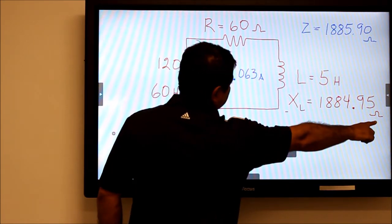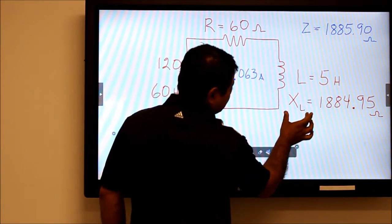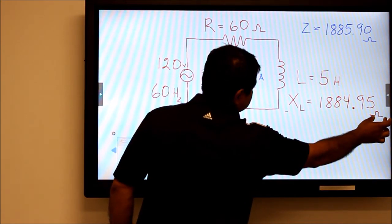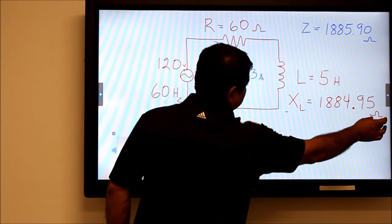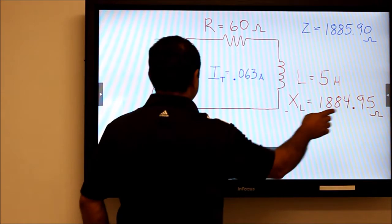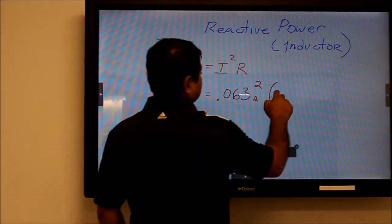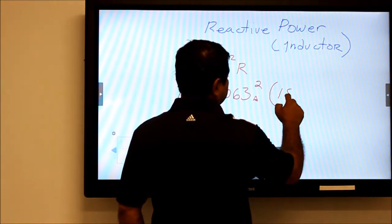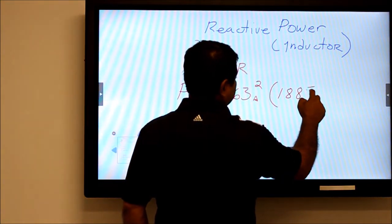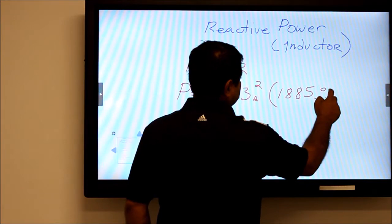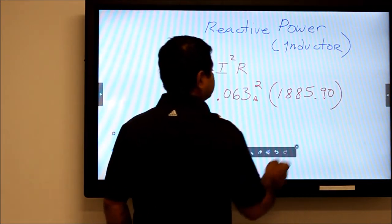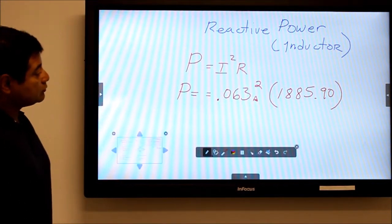Even if you don't recognize the title of the value, you should recognize the units since we're doing Ohm's law. So it's 1884.95 ohms, and you replace that over here: 1885.90 ohms.